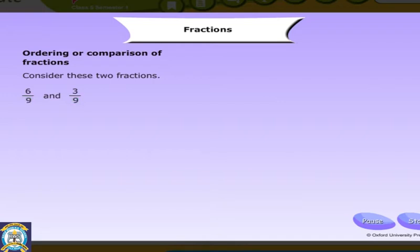When comparing like fractions, the one with the smallest numerator is the smallest fraction, and the one with the greatest numerator is the greatest fraction. So, 6 by 9 is greater than 3 by 9.